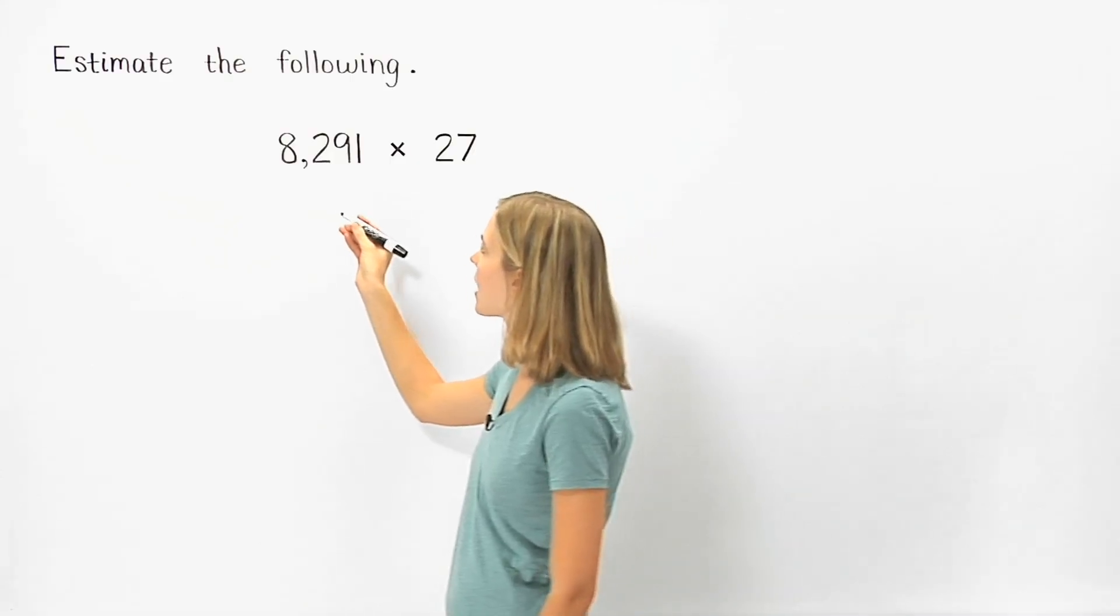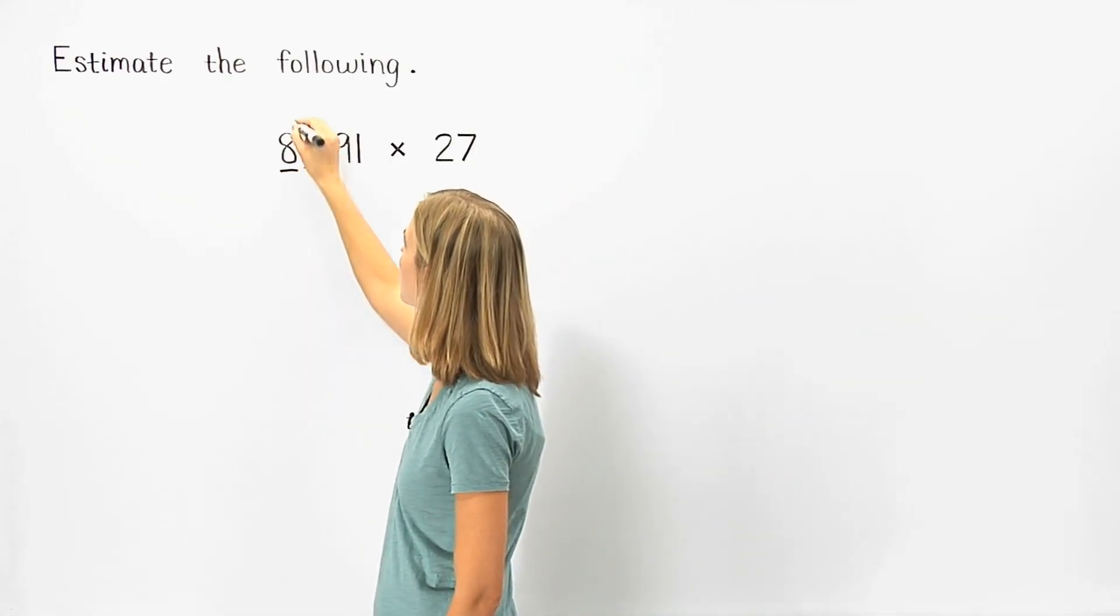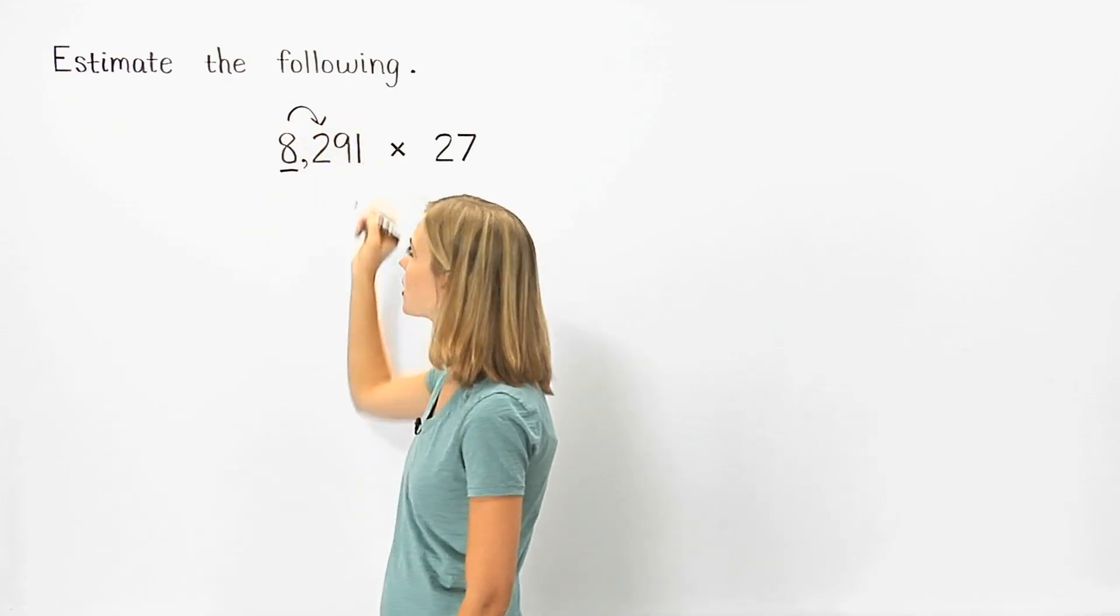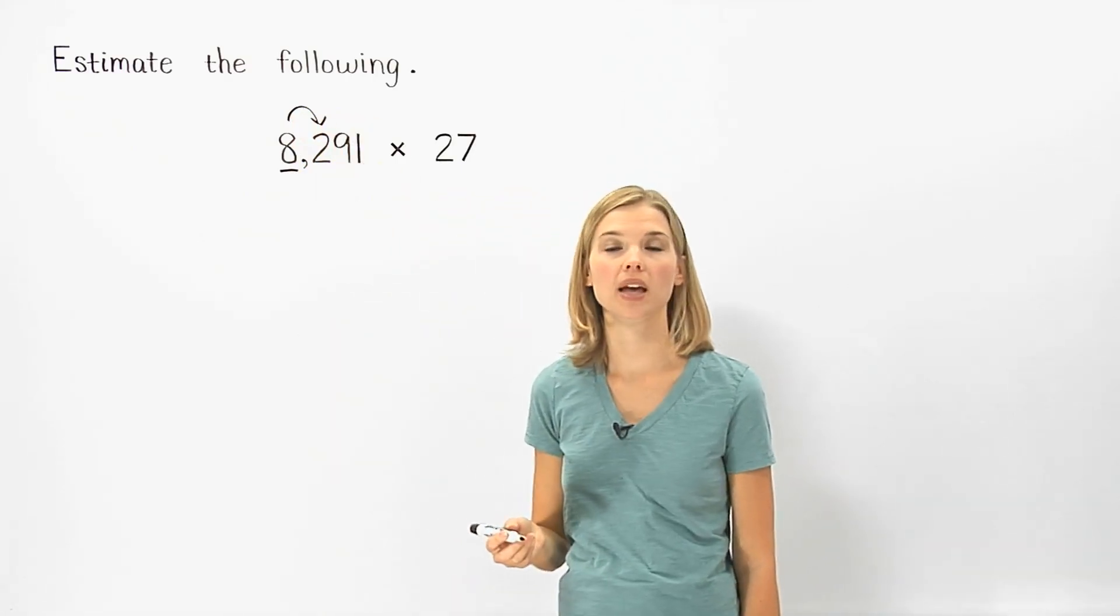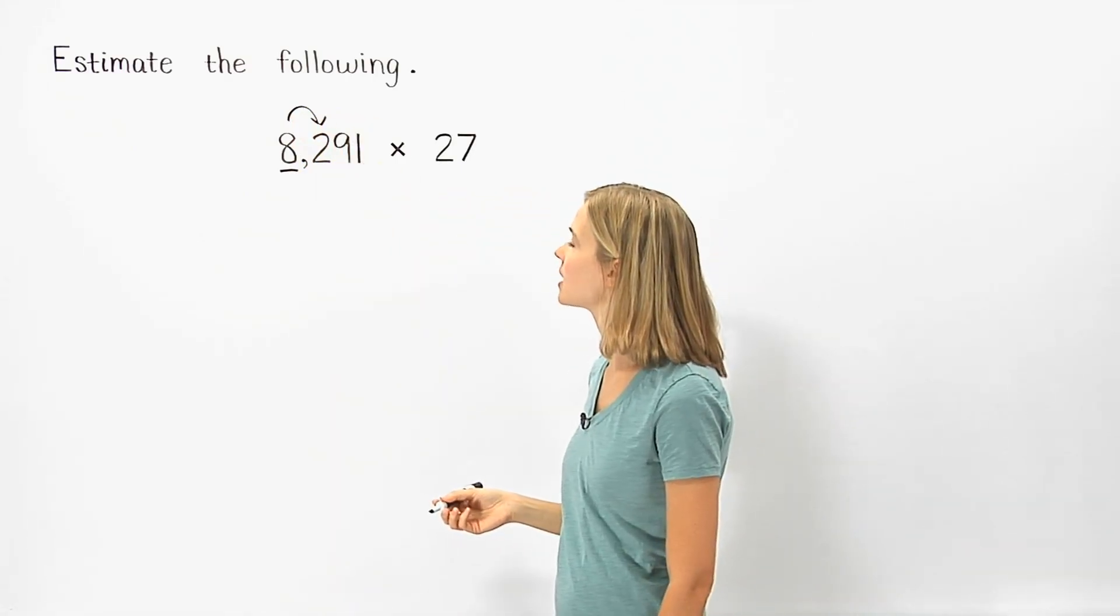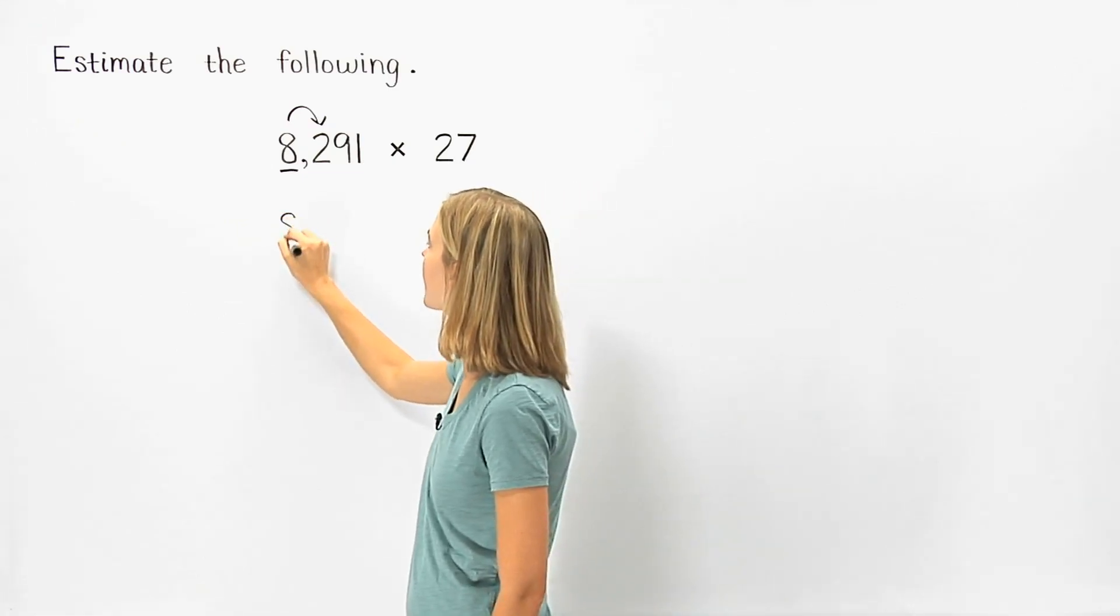To round 8,291 to the nearest thousand, the two to the right of the rounding place tells us to round down. So 8,291 rounds down to 8,000.